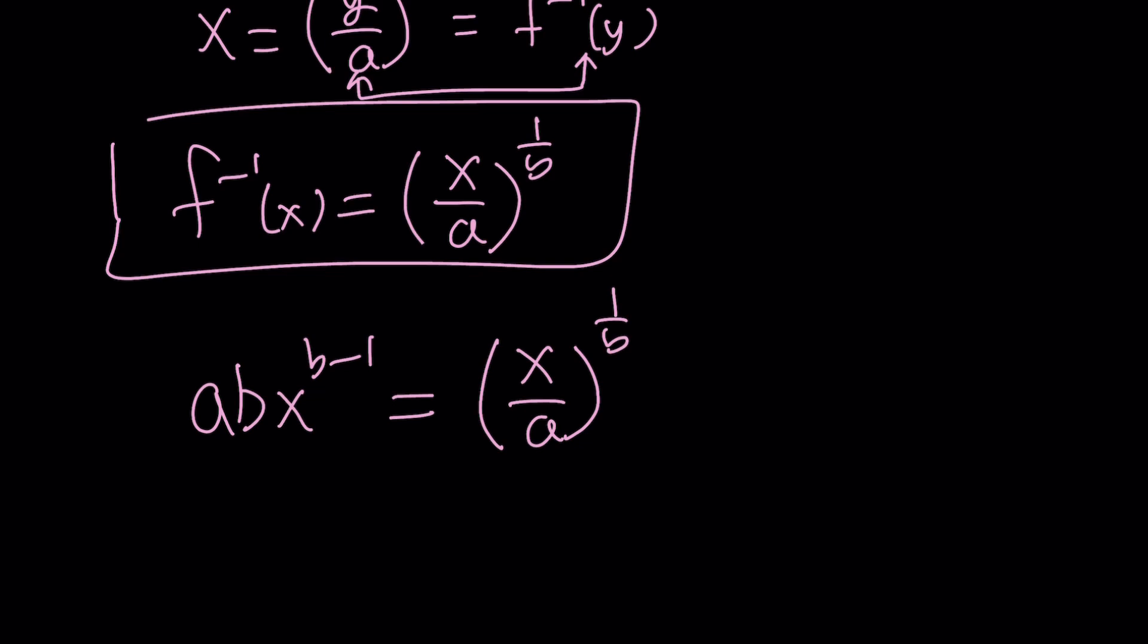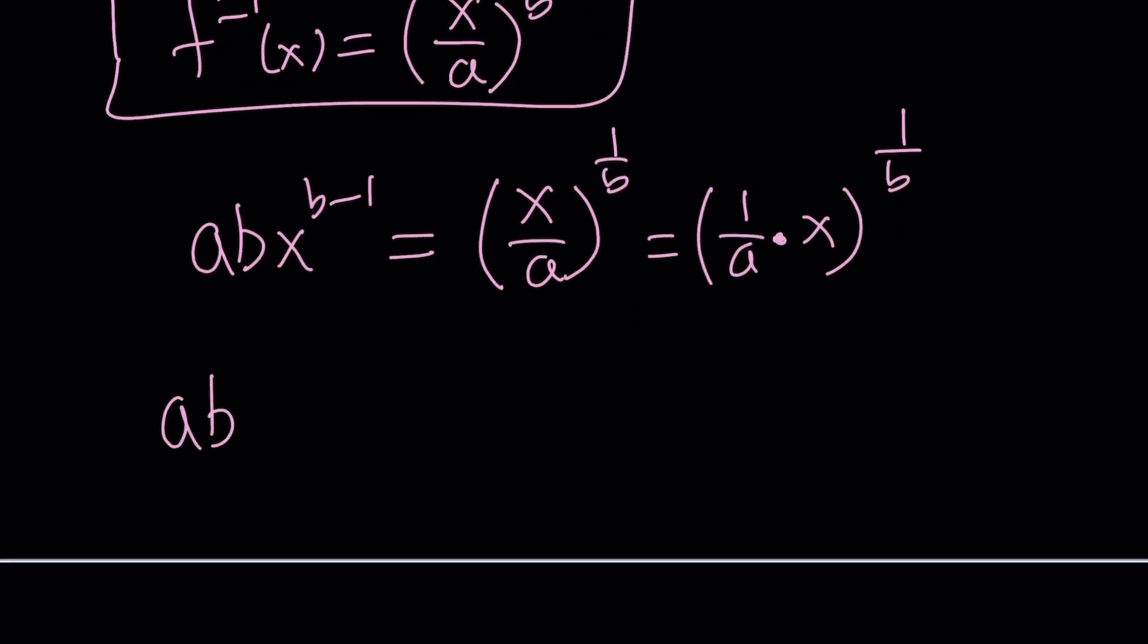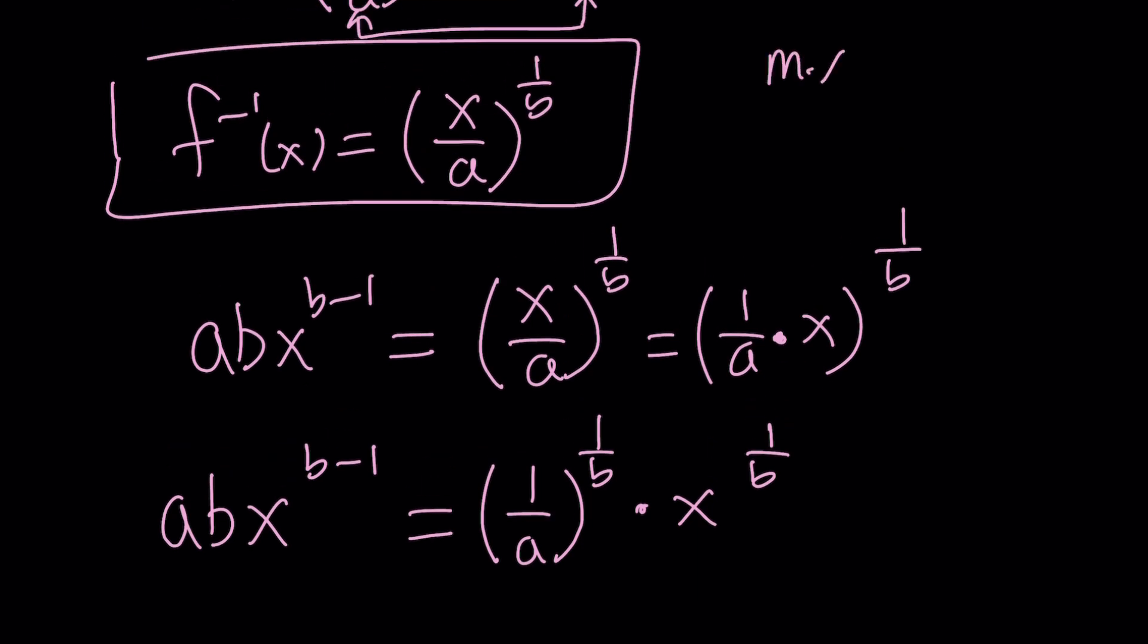To make things a little easier, we can do the following. This is 1 over a times x to the power 1 over b. You can separate the coefficient and the variable and write this as ab times x to the power b minus 1 equals 1 over a to the power 1 over b times x to the power 1 over b. The good thing about it is if these two power functions are equal, if you have something like m times x to the n equals k times x to the p, doesn't this imply that m equals k and n equals p? The reason behind that is very simple. m over k times x to the power n minus p is supposed to equal 1. We have a function that has a variable on the left, but on the right-hand side, we have a constant. The only way this can happen is by having x to the power 0, which means n equals p.